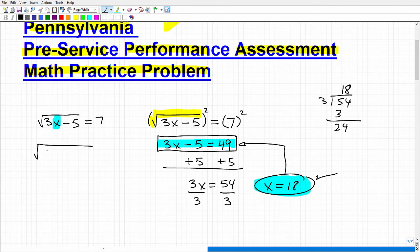Now so this would be the square root of 3 times 18 minus 5. Does that equal 7? So 3 times 18, that would give us 54, right? We just figured that out. So that's the square root of 54 minus 5, is that equal to 7? 54 minus 5 gives me 49. Is the square root of 49, 7? Yes. It's also negative 7, but this is a true statement. That's the main idea here. Okay, so that's the basics of solving a radical equation.